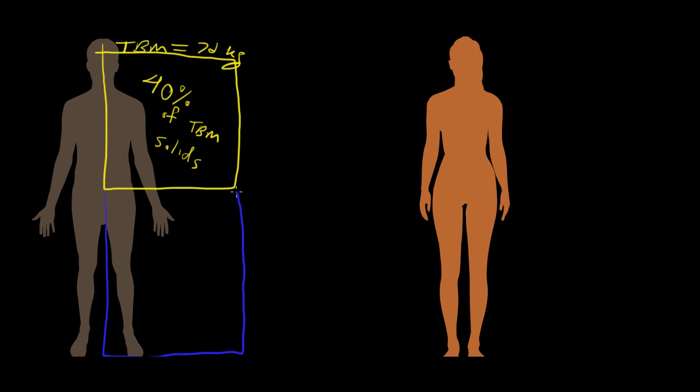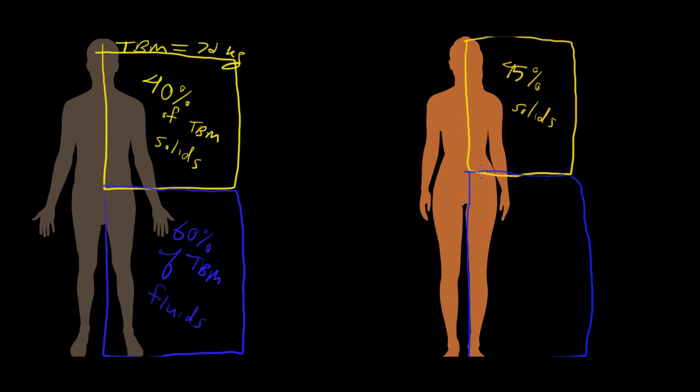And then we have fluid. Fluid is the rest of the body—it's 60% of total body mass. Most of the weight of our bodies is in fluid. Females are slightly different. They have a little bit more solid and a little less fluid as a percentage of the total body mass. So that's 45% solid and 55% is fluid.